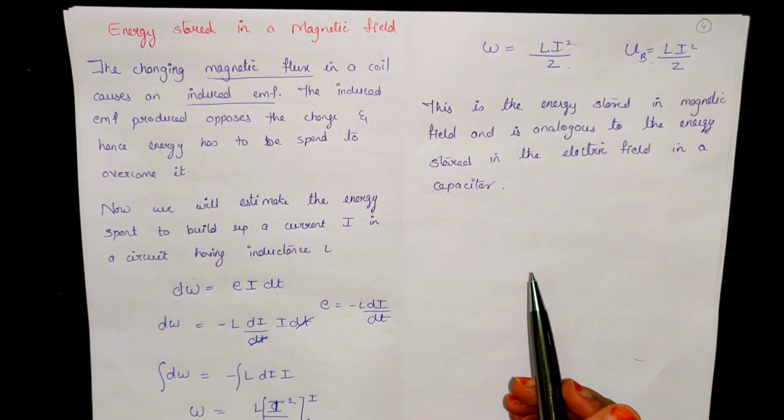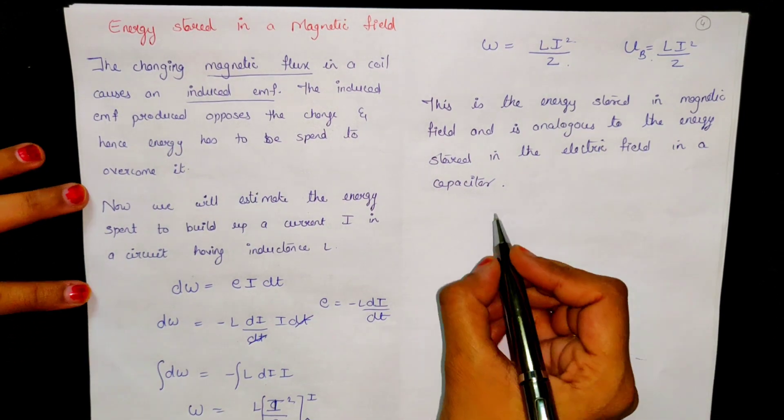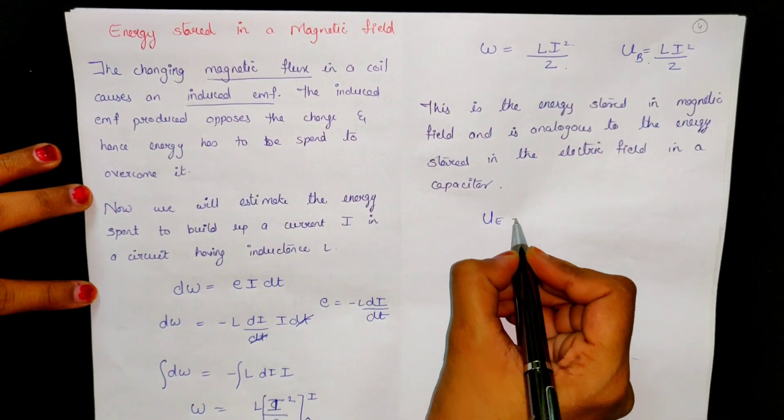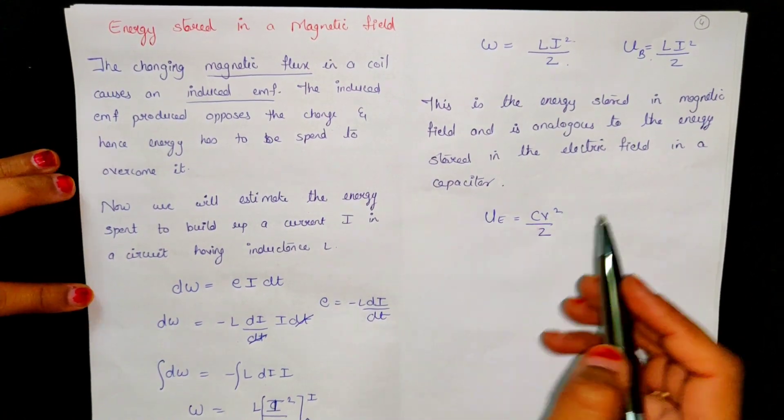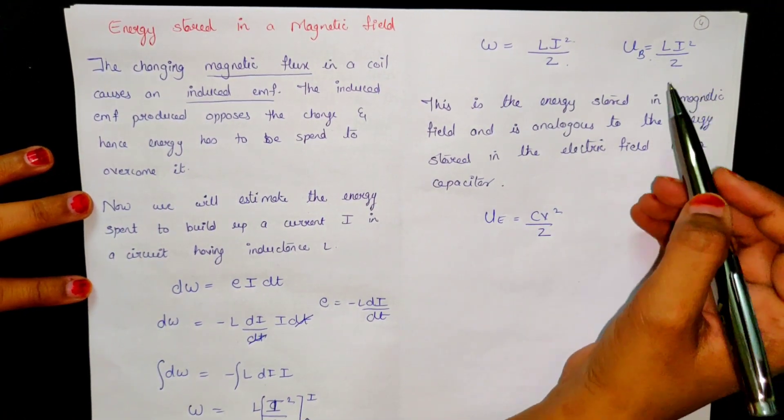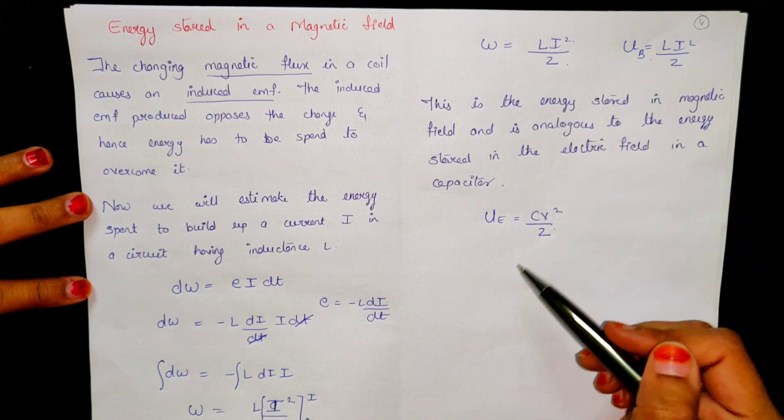If you remember a little electrostatic, we have written for energy C V square by 2. This is the same: L i square by 2. So these both are analogous to each other.